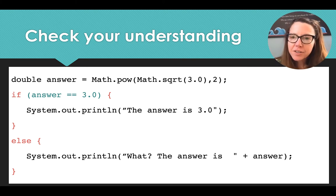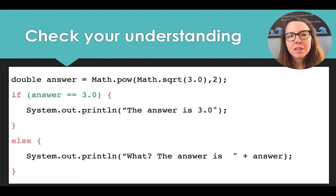So let's check our understanding of what should happen here. We've got a new double variable holding, named answer. And answer is going to hold the result of the following. We're going to take Math.pow, which is going to take some value and raise it to a power.